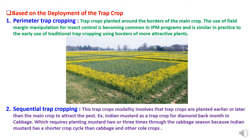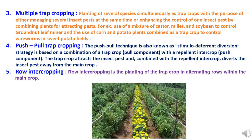Second is sequential trap cropping. This modality involves trap crops being planted earlier or later than the main crops to attract the pests. For example, Indian mustard grown as a trap crop for diamondback moth in cabbage requires planting mustard two or three times through the cabbage season, because Indian mustard has a shorter crop cycle than cabbage and other cole crops.